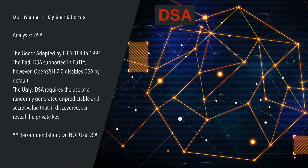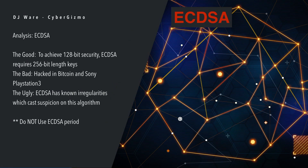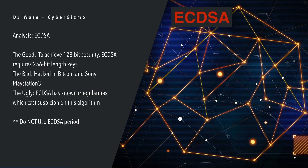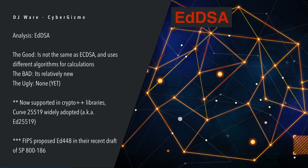The ugly is DSA requires the use of randomly generated and unpredictable security values — and if you were to discover those, you could generate the private key from them. My recommendation is that DSA is obsolete — don't use it. ECDSA achieves 128-bit security and only requires a 256-bit key length to get there. However, that particular algorithm was involved a few years ago with Android phones storing Bitcoin wallets — attackers were able to break the wallet encryption and steal the Bitcoin. Sony PlayStation also had an issue using that protocol, allowing people to gain access to the PlayStation. I would not recommend using ECDSA.